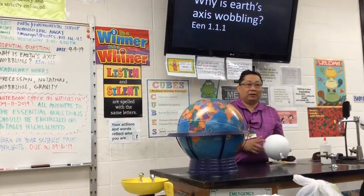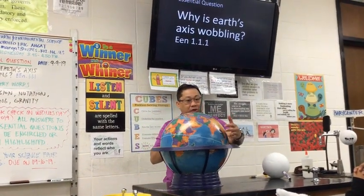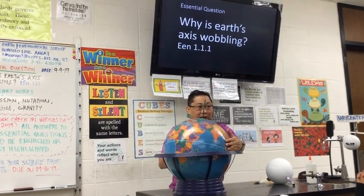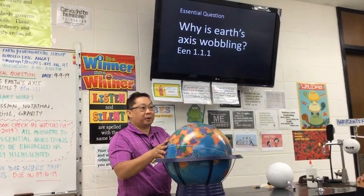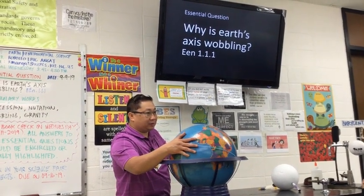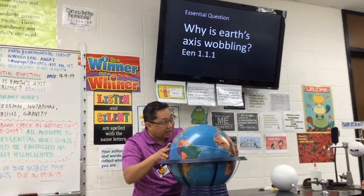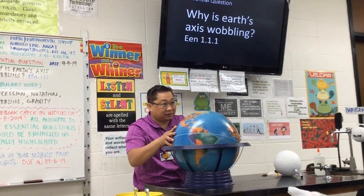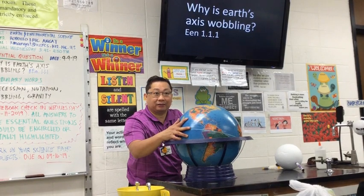Let's begin with the motion of Earth. One of the motions of Earth is called rotation. Rotation spins from the west going to the east — west to east. As you can see, as I spin it, the axis wobbles. It's the same thing that is happening with our planet.